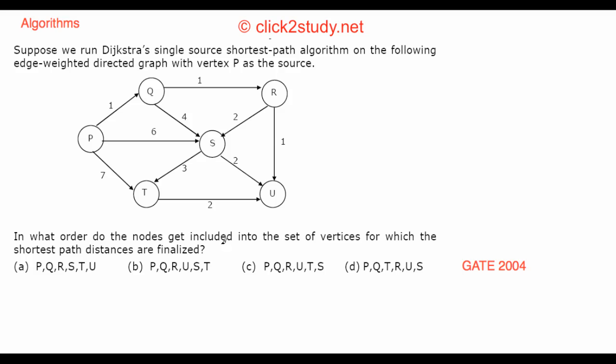In what order do the nodes get included into the set of vertices for which the shortest path distances are finalized? If you remember when you run your Dijkstra's algorithm you start at a source and at each step you finalize one node for which you have found the shortest path. So you have to give the order of those nodes in which order do you get these nodes finalized in this case.